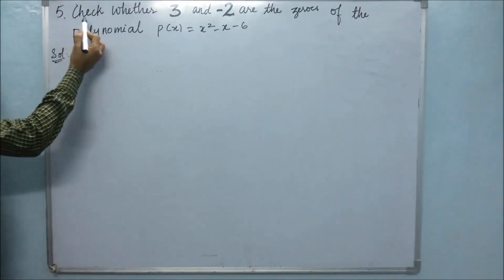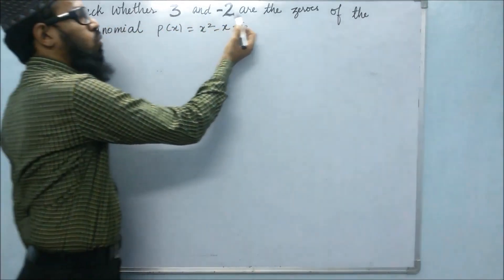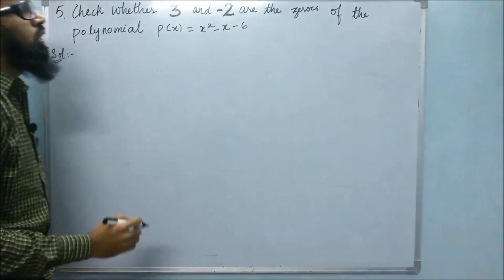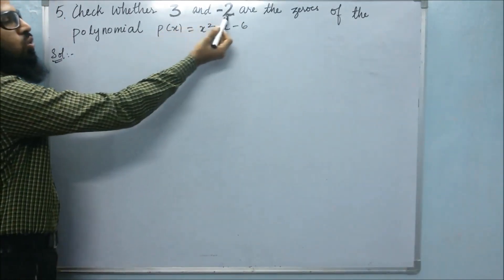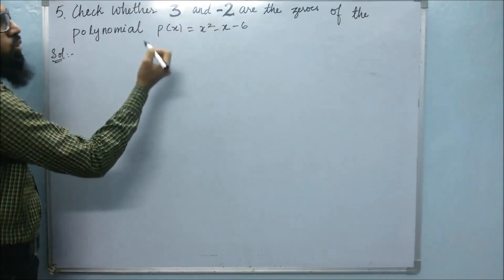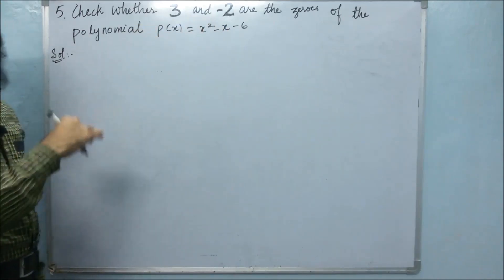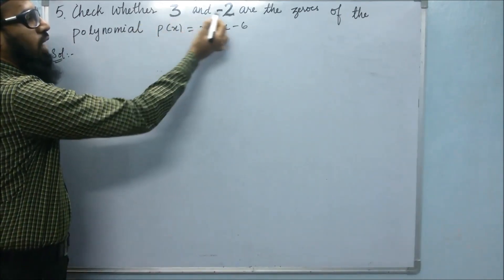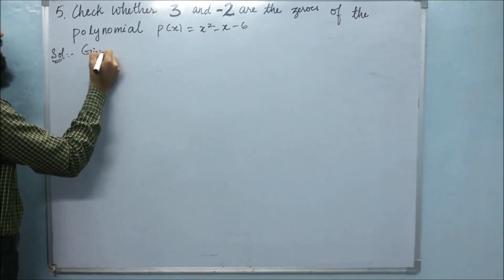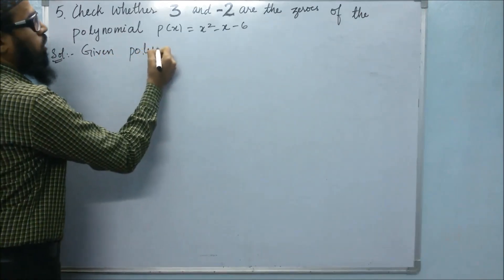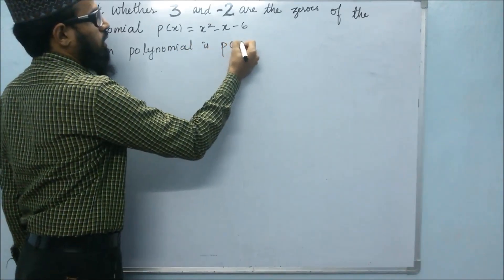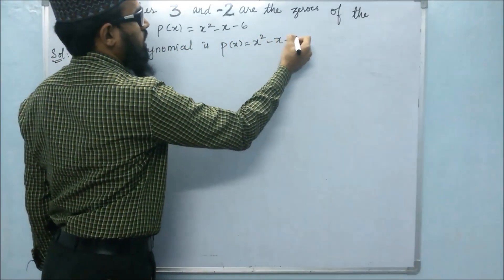In the fifth problem, they said to check whether 3 and minus 2 are the zeros of the polynomial P of x equals x square minus x minus 6. For proving that these two are the zeros, we substitute these values in place of x. If we get 0, then these values are the zeros of this polynomial. The given polynomial is P of x equals x square minus x minus 6.